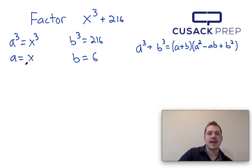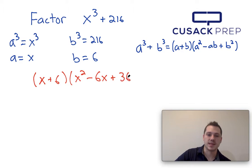Once I have this, I just need to plug in x for a and 6 for b into the right hand side of this equation. So when I do that, I'm going to have x plus 6 times x squared minus 6x plus 6 squared, which is plus 36.